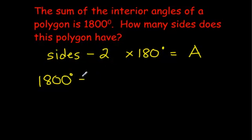Instead of multiplying, you divide by 180 first of all. And if you do that on your calculator, you're going to end up getting the number of sides.